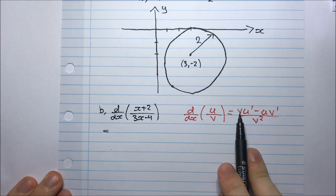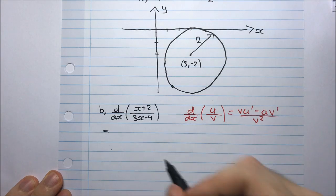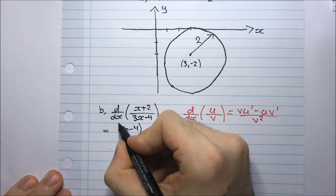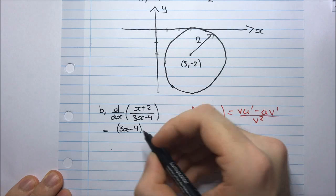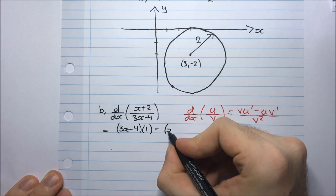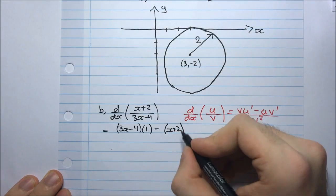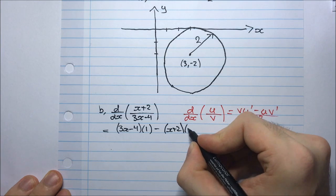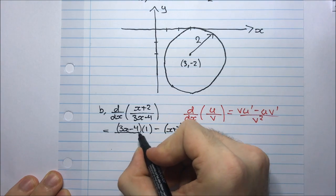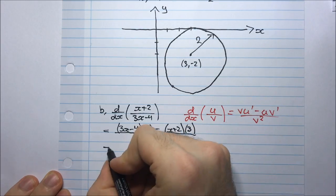So my v is 3x - 4 and my u is x + 2. So v is 3x - 4 multiplied by the derivative of the top which is just 1, minus what's on the top multiplied by the derivative of what's on the bottom. So the derivative of the denominator is 3. And I divide this by the square of the denominator.